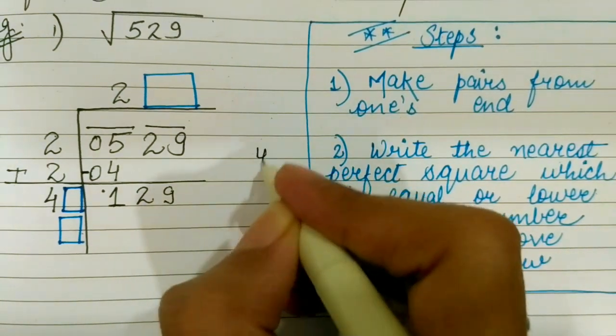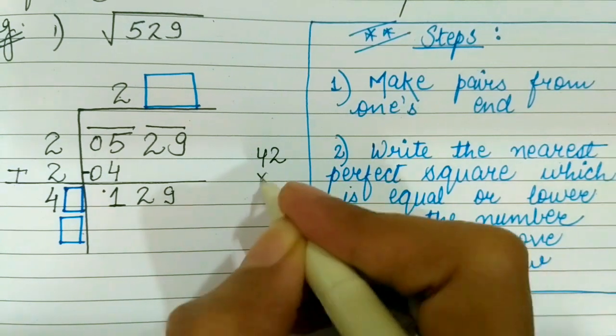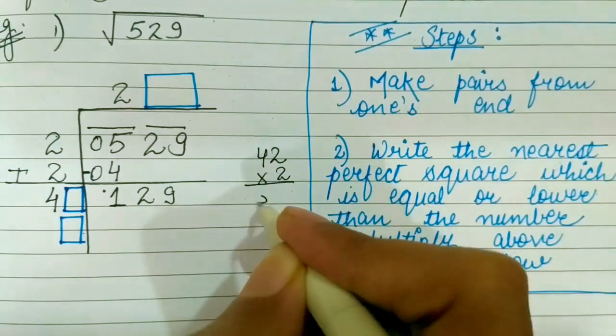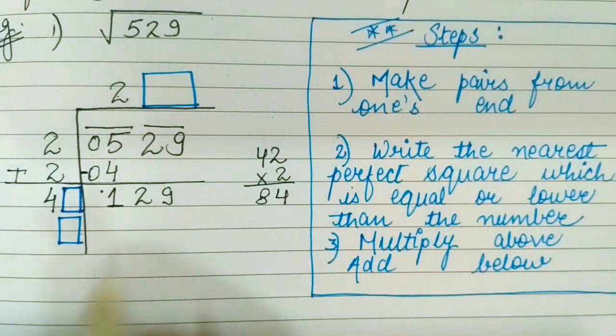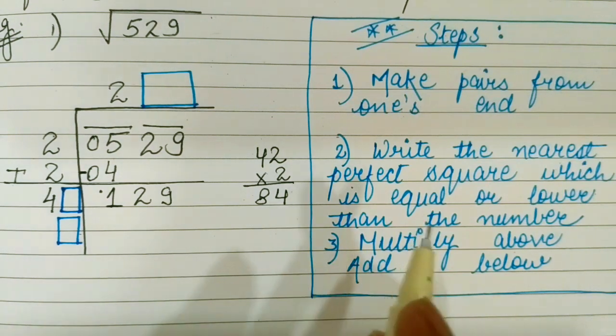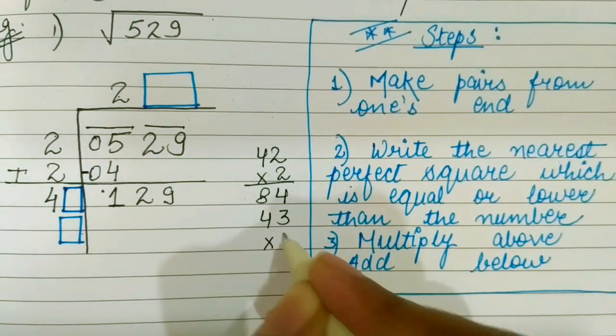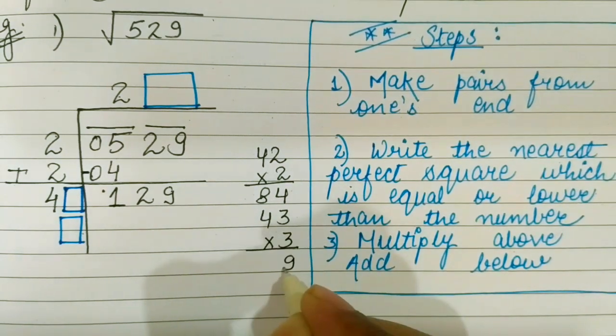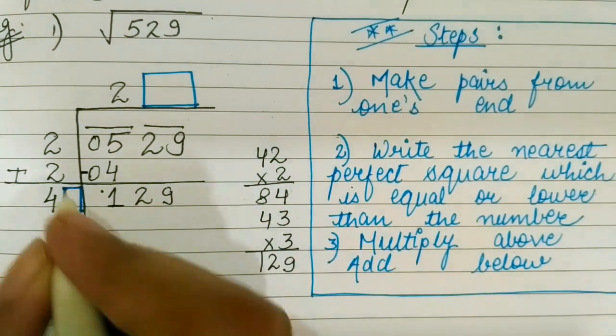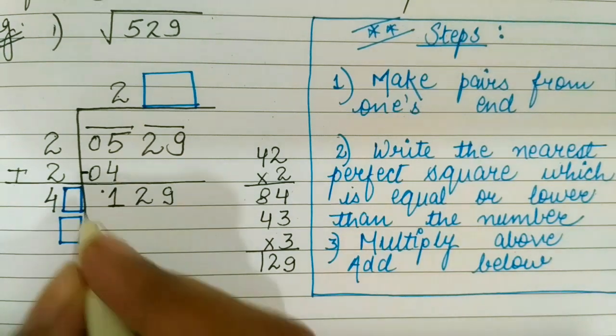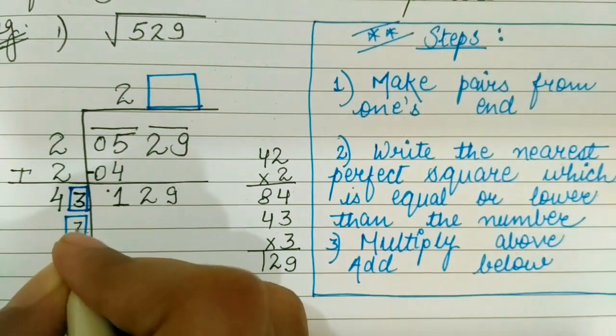If I put in the box 2 it will become 42 into 2. It will become 84 which is not equal to 129. Next try putting the next number 43 into 3. 3 threes are 9. 3 fours are 12. So we got our answer. So in the box we are going to fill 3.